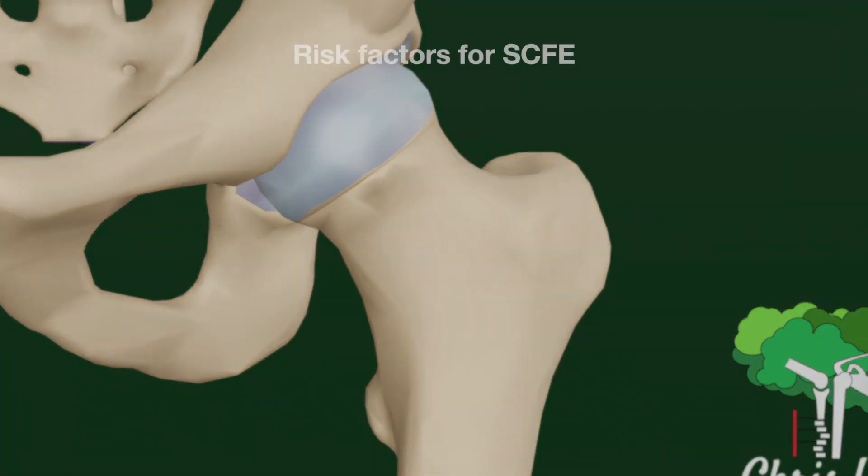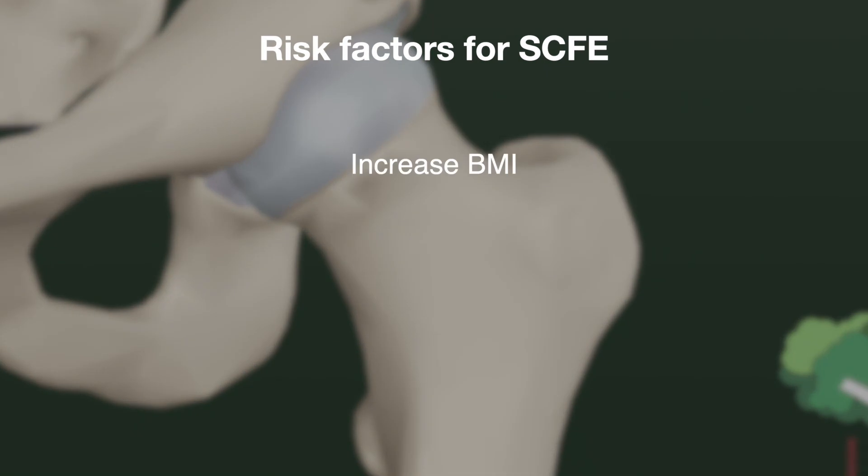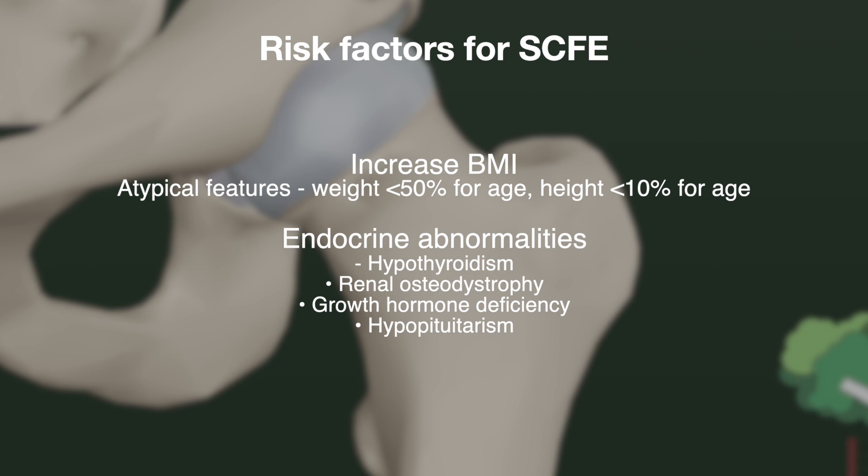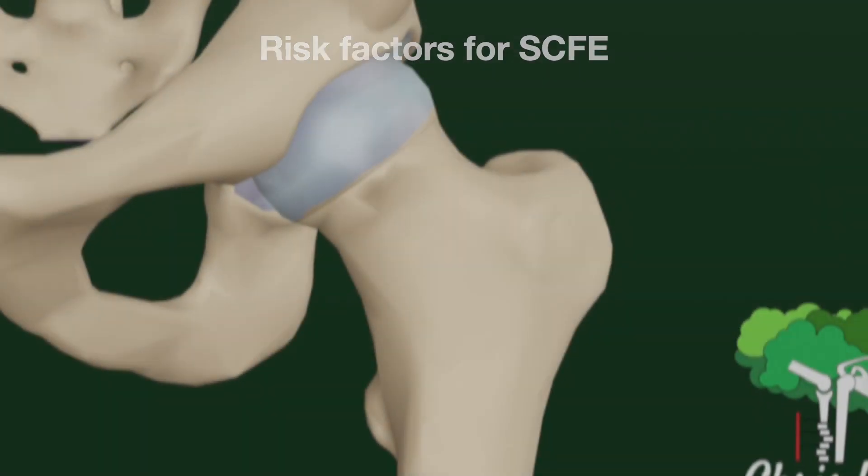Risk factors for SCFE include an increased BMI, as the increased weight magnifies the stress applied onto the growth plate, as well as other endocrine abnormalities. Therefore, features of an atypical SCFE would include patients below 50% the median weight for their age or below 10% the median height for their age.